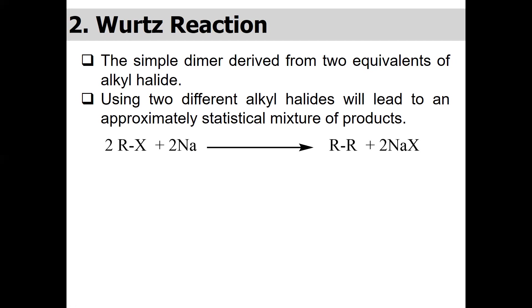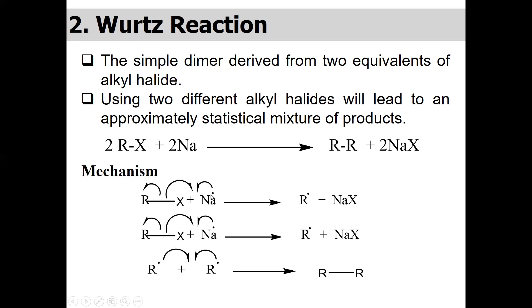We discussed this in the previous lecture. Free radical reactions have three steps: chain initiation, chain propagation, and chain termination. When we treat the alkyl halide with sodium metal, through a free radical mechanism, the carbon-halogen bond is broken and an alkyl radical is generated. The alkyl radicals combine and the halide is taken up by sodium to form sodium halide.